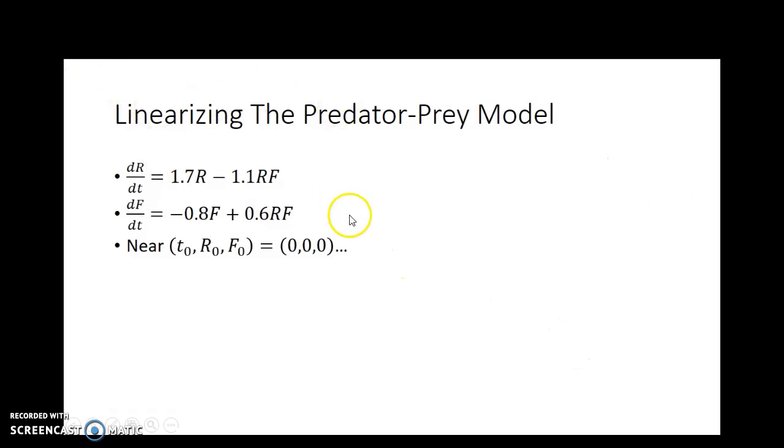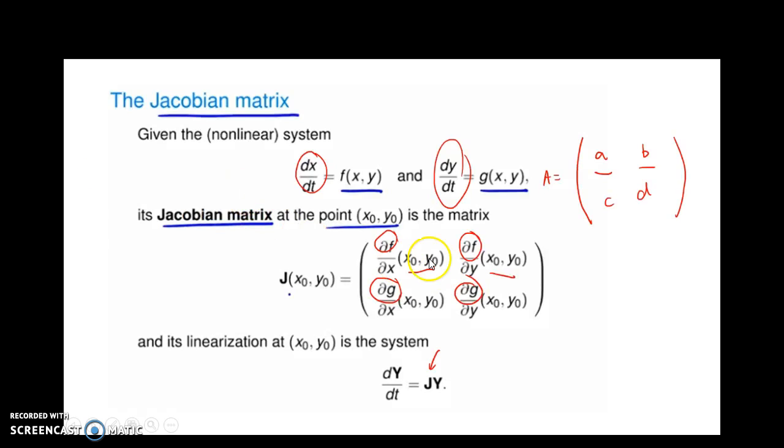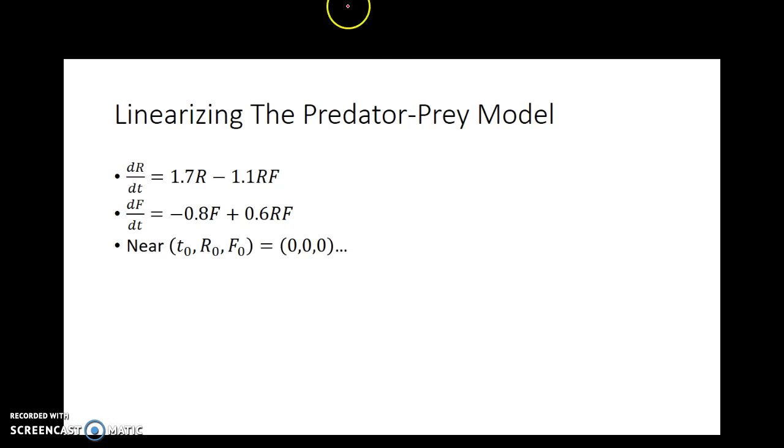So let's take a look at this one here. How would this work out? Well, first of all, I've got to kind of reconcile what I have here. I'm not using x and y, I'm using R and F. So what I will go ahead and do here is I will rewrite these to keep this simple. dx dt equals 1.7x minus 1.1x times y. And then dy dt is going to be negative 0.8 times y plus 0.6 times x times y. So there's my system.